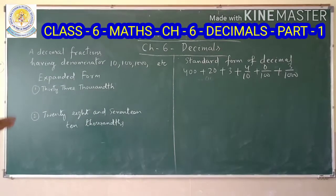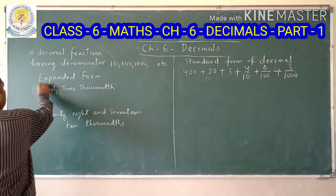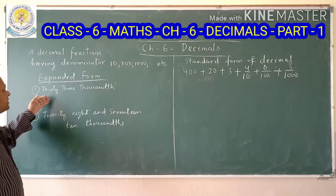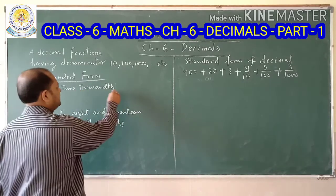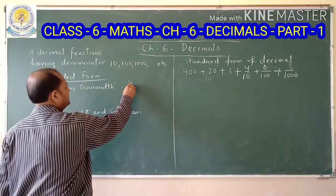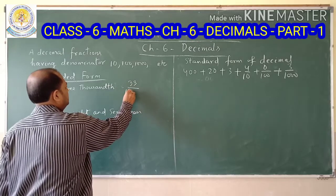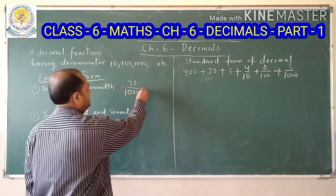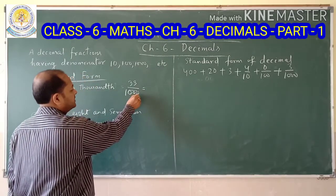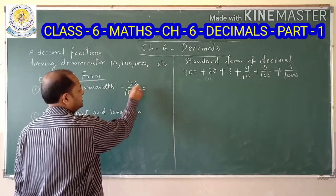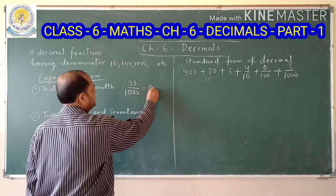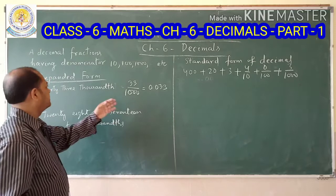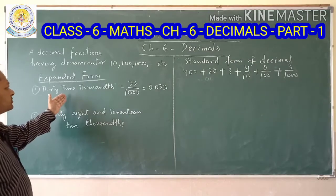Now, what is the expanded form of a decimal? Here is the first example: 33 by 1000. Since the denominator is 1000, the decimal should have 3 places. We write 33 with 3 decimal places — but 33 has only 2 digits, so we put a zero before it: 0.033. So 33 by 1000 equals 0.033.